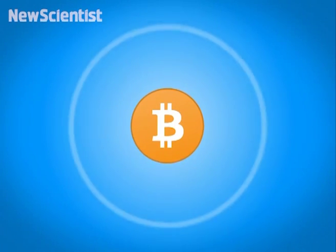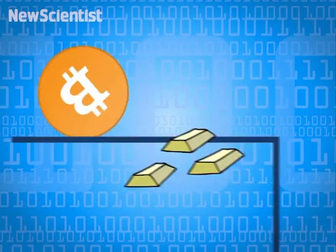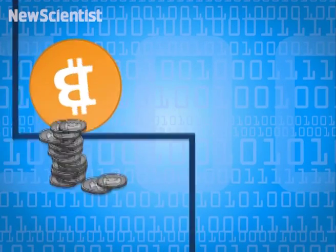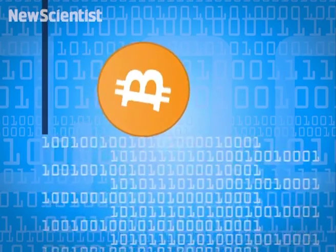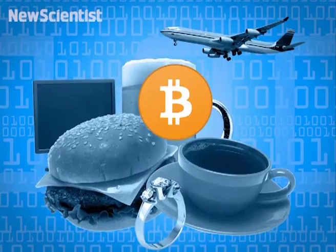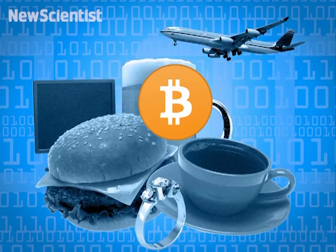By now, you've probably heard of Bitcoin, the mysterious digital currency that's not backed by gold or silver or the guarantee of any government or bank. In fact, it seems like it's based on nothing, and yet you can buy all kinds of real-world things with it.